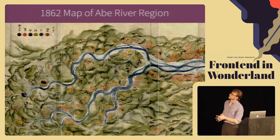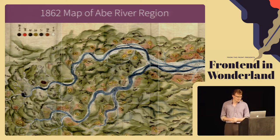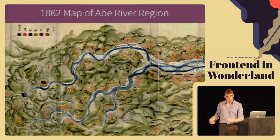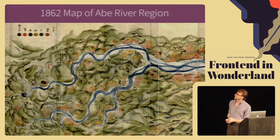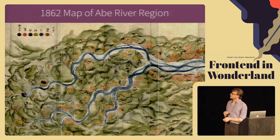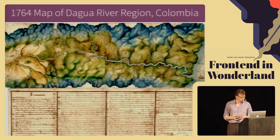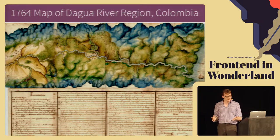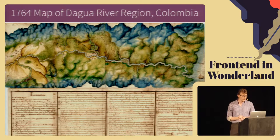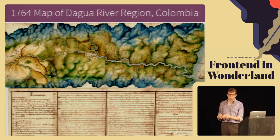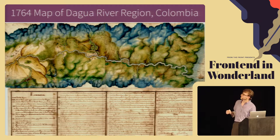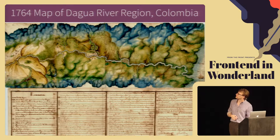That map made me think of my second favorite map ever — a Japanese 1862 watercolor map of the Abe River region, showing where the hills are. It's a very small crop because it's a massive map. They're not elevation levels like the Iceland one, but they do show where the hills are and kind of how tall they were. My absolute favorite is in the Cartographer book — it's of the Dagu River region in Colombia, and it's another watercolor. It shows how the styling of a map can look really nice. One interesting thing: the top is actually south, not north.